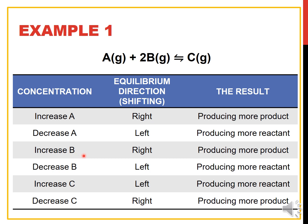If we increase the concentration of C, which is in the product position, increasing it will produce less of C, so we will produce more of A, and it shifts to the left. Decreasing the concentration of C will produce more of C, meaning we will produce more product, so it shifts to the right.